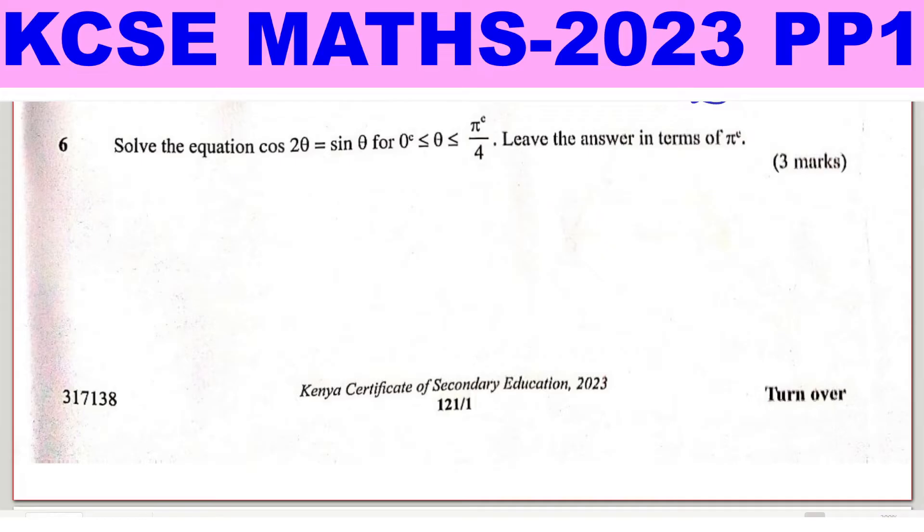In this question, we are going to use the complementary property in trigonometry. Recall that given cosine of angle A equals sine of angle B, then if you take angle A plus angle B, it should add up to 90 degrees.